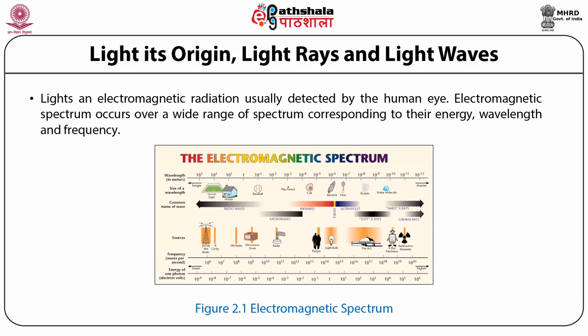Light is an electromagnetic radiance usually detected by the human eye. The electromagnetic spectrum occurs over a wide range corresponding to energy, wavelength, and frequency. In the spectrum, we talk about gamma rays, X-rays, ultraviolet rays, visible light, infrared rays, radio waves, and microwaves. The wavelengths visible to humans occupy a very narrow band from about 700 nanometers for red light to about 400 nanometers for violet light.